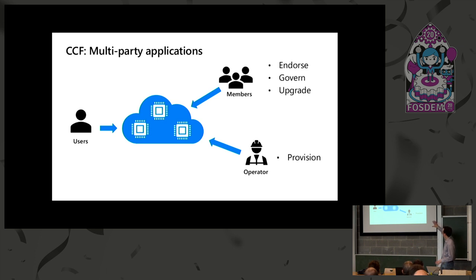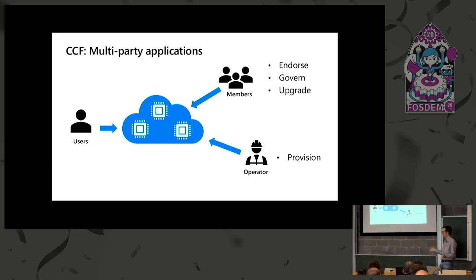Separate from the members is an operator — someone who just provisions things, providing the hardware and spinning up instances of the nodes the application runs on. But the operator is not trusted; they're not inside the trust boundary. They can provide nodes to the members on behalf of the members, but they do not have any specific access to the application.